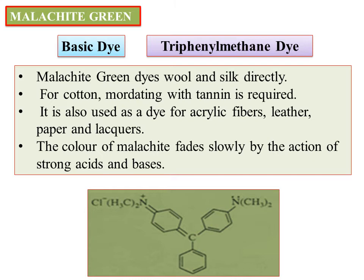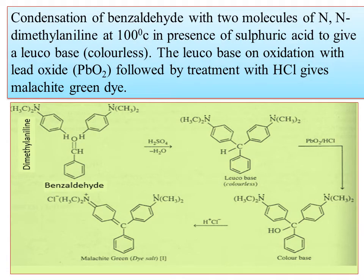Malachite Green fades slowly by the action of strong acids or bases. The dye should be fast to acid and base, light, and heat. What we use in the dye should be fast — it should not fade after a time. We are going to take two moles of N,N-dimethylaniline, which is called aniline.